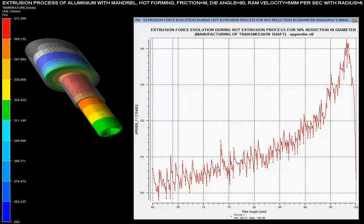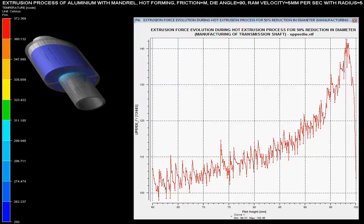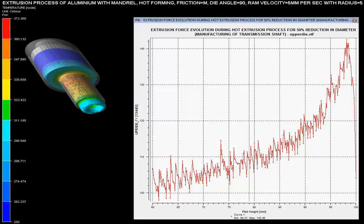Extrusion forces with respect to pilot height are shown over the graph. These forces are maximum when there is a sudden change in the area of the cross section of the billet. As the pilot height reduces, the force required for the extrusion of the pipe increases.